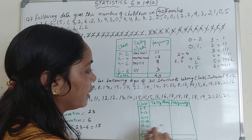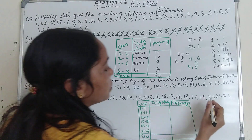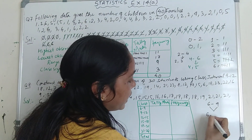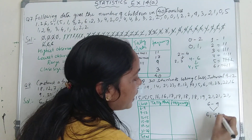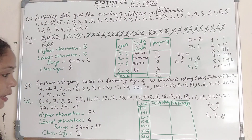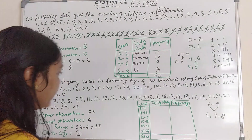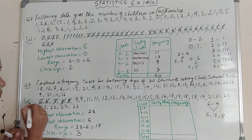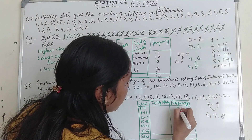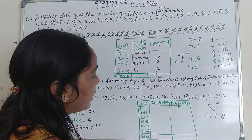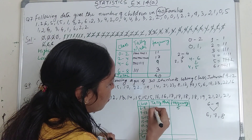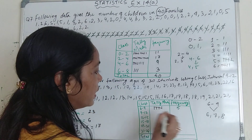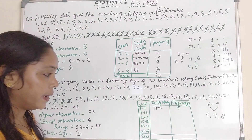Now count the frequencies. For interval 6 to 9, include 6, 7, and 8, excluding 9. Counting gives: 1, 2, 3, 4, 5 — so the frequency is 5. Write tally marks for 5: four lines with one cut across them.